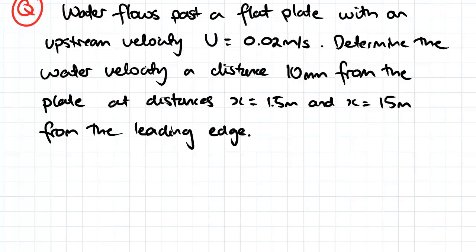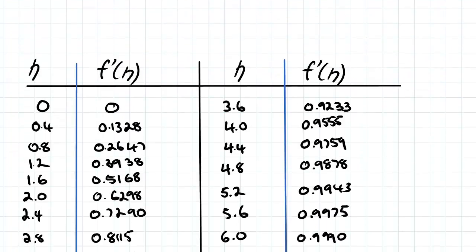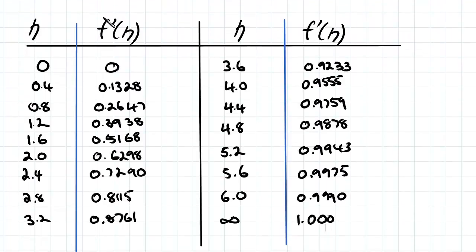We've also been given the values that relate eta with the derivative of the function with respect to eta, and that's going to allow us to determine what the velocity is at certain points.